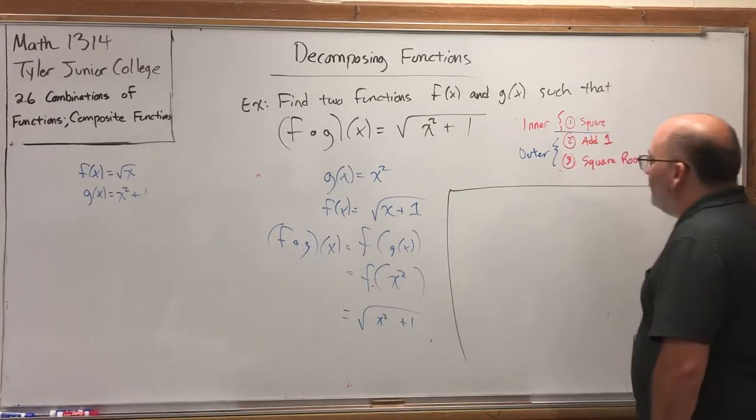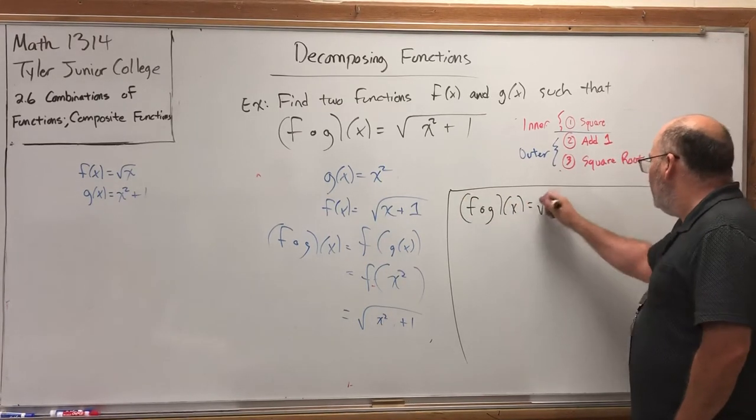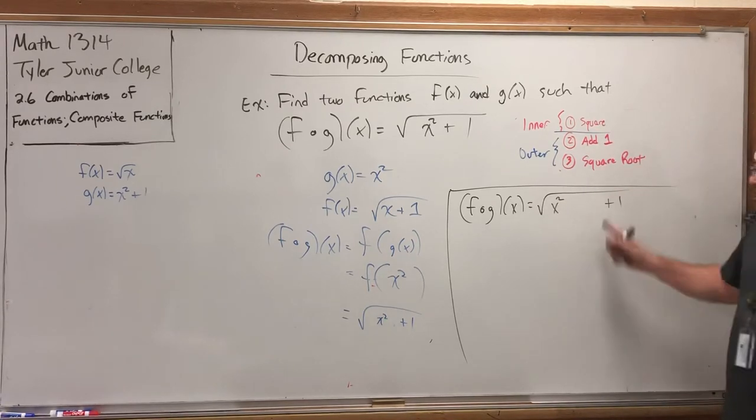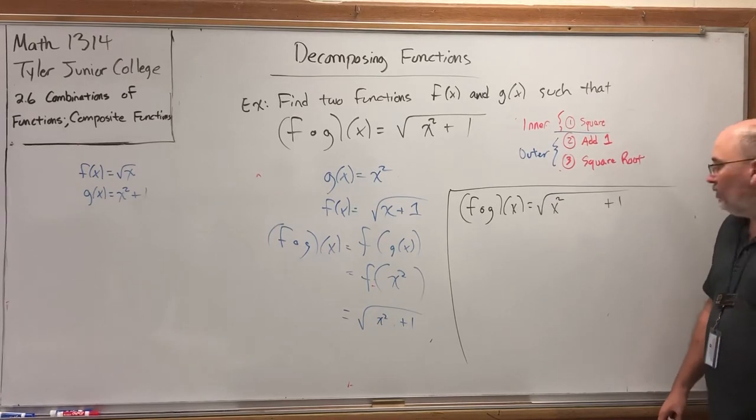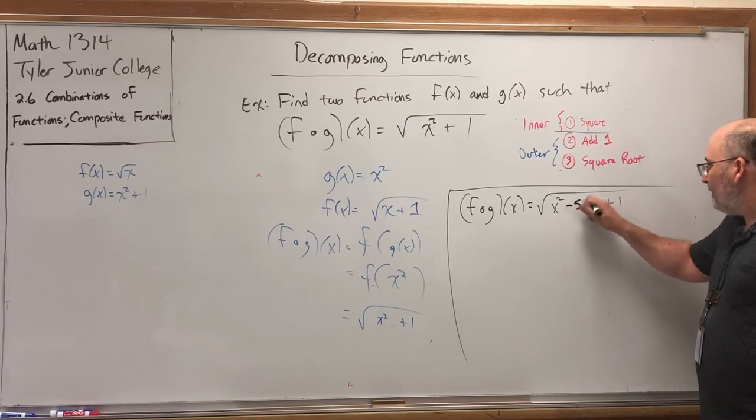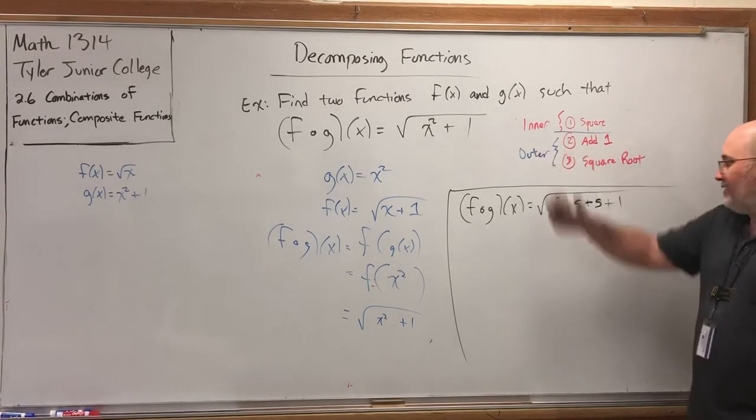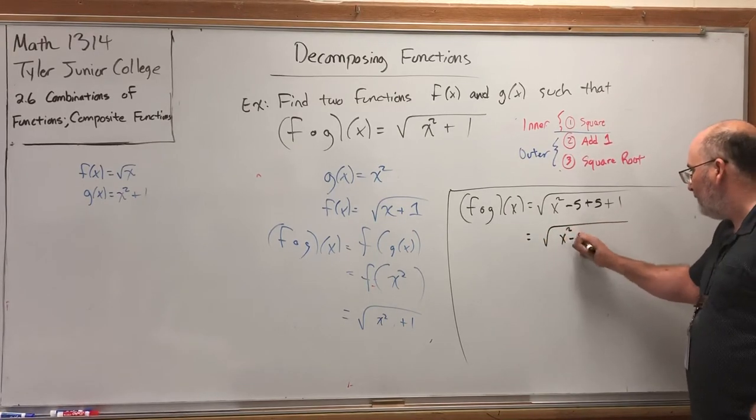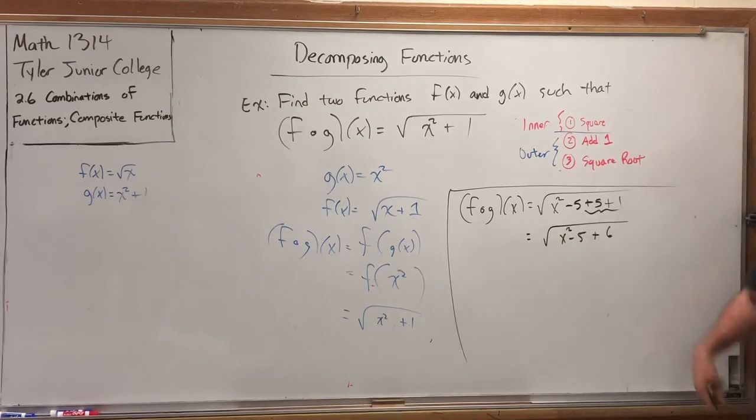What if I took the already created composition, square root of x squared plus 1. Well, look at that space in there. Why is there a space in there? Because I'm going to insert two numbers that cancel. How about minus 5 and plus 5? They would cancel, and I would get back to there. But now I can look at this as the square root of x squared minus 5 plus 6. Doesn't that still equal plus 1? And now there are four things being done.